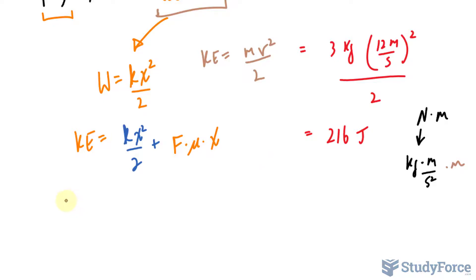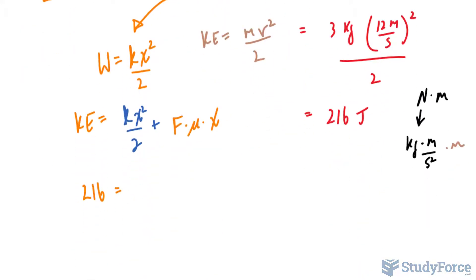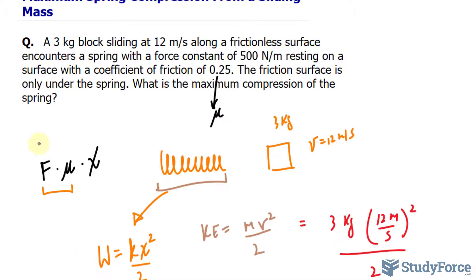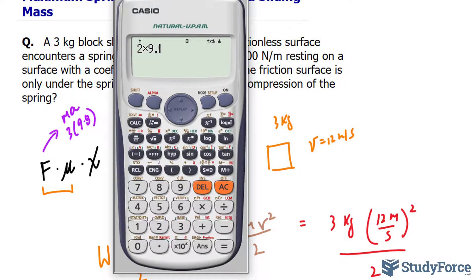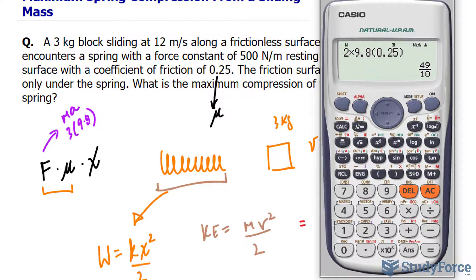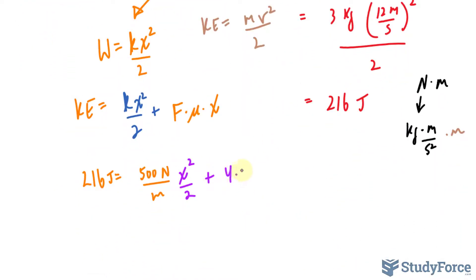Now I can substitute everything known. The kinetic energy at the beginning is 216 joules. The spring constant is 500 newtons per meter, so we have 500 times x squared over 2. The force is mass times acceleration: 3 times 9.8 meters per second squared, multiplied by mu, which is 0.25. So 3 times 9.8 times 0.25 gives 4.9. That gives us the friction term: 4.9x. Solving for x will give us the maximum compression.